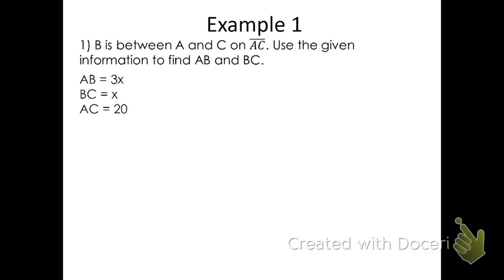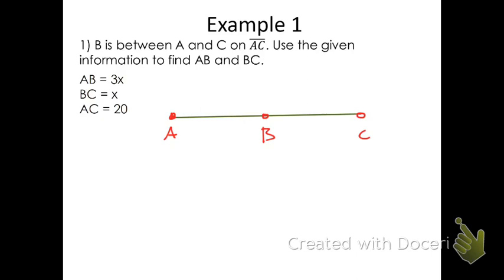Let's look at example one. It says B is between A and C on segment AC. Use the given information to find AB and BC. I'm going to start by drawing a segment and putting points A, B, and C. This may not be drawn to scale — B could be really close to C or really close to A. So I'm going to say AB equals 3X, BC equals X, and they tell me that AC, the entire thing, is 20.